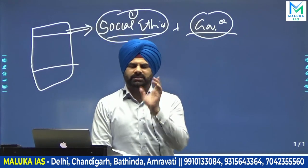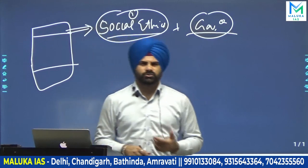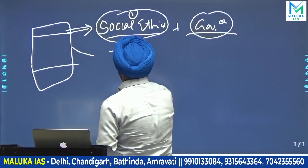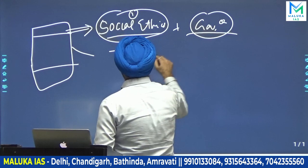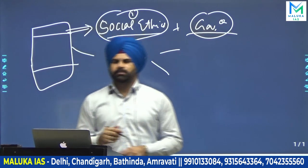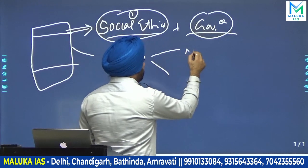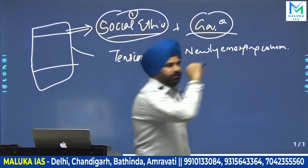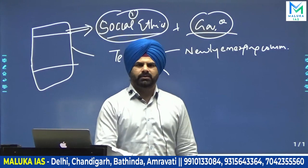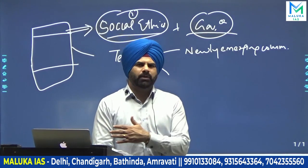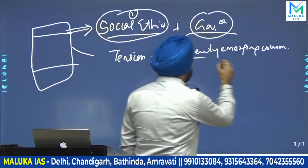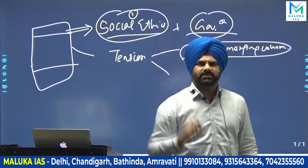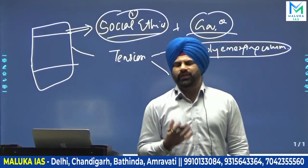Why was he focusing upon governance and providing a basis for social ethics? Because there was a sort of tension prevailing in society. For example, there were newly emerging communities — like the mercantile community. The administration had become very complex, and these mercantile communities, which were newly emerging and very rich, were demanding a higher social status on the basis of the huge amount of wealth they had accumulated. And there were administrative issues as well.